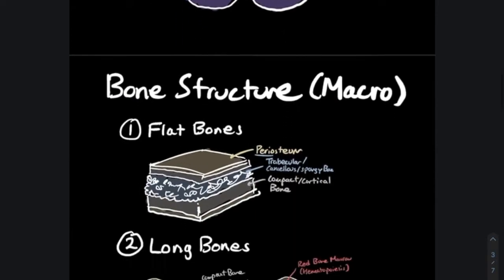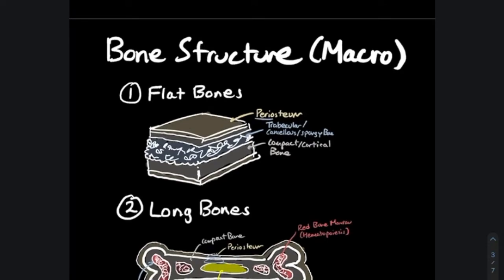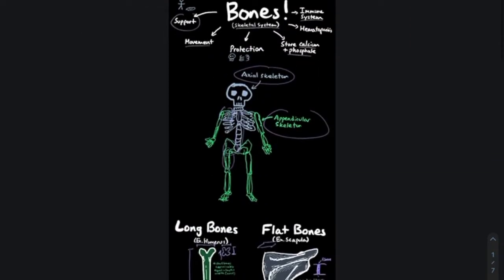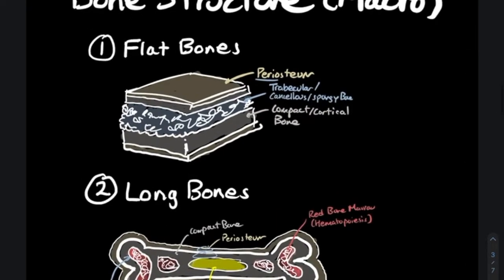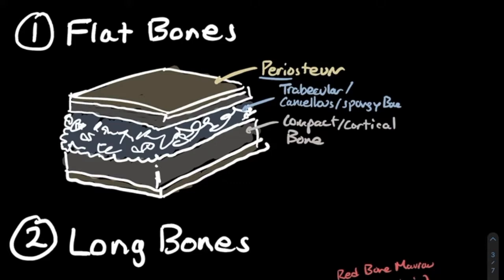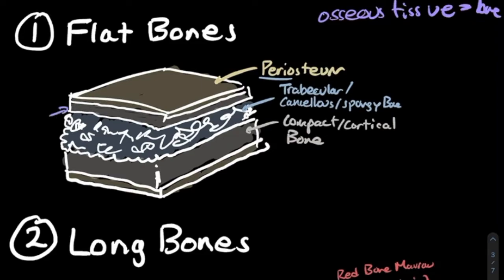Now let's talk about bone structure, starting at the macro level before working our way to the osteons. For flat bones, they have the periosteum — 'peri' meaning around and 'osteum' meaning bone — a connective tissue that encapsulates the bone. Then we have a layer of compact or cortical bone, where our osteons are located. In the middle is trabecular, cancellous, or spongy bone, which is not nearly as dense as compact bone but composes the center of our flat bone sandwich.